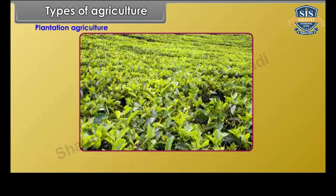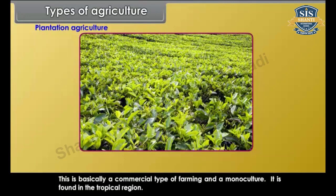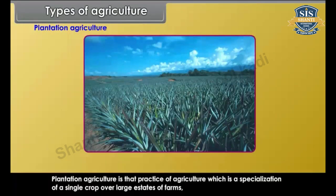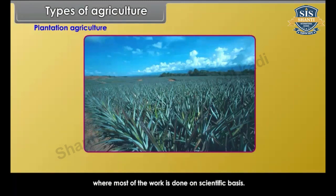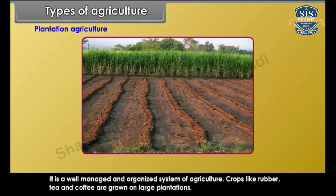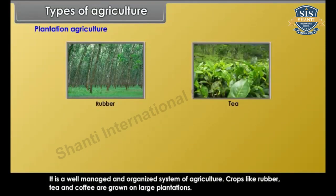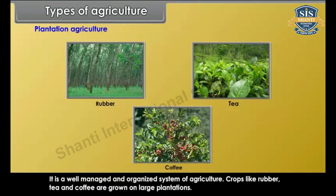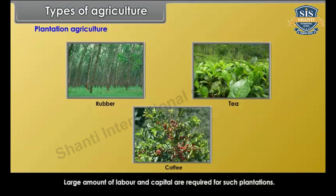Plantation agriculture is basically a commercial type of farming and a monoculture. It is found in the tropical region. Plantation agriculture is the specialization of a single crop over large estates or farms where most of the work is done on a scientific basis. It is a well-managed and organized system of agriculture. Crops like rubber, tea and coffee are grown on large plantations. Large amounts of labor and capital are required for such plantations.